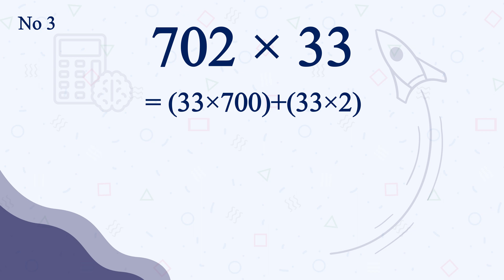33 times 700 plus 33 times 2. 7 times 33 is 231 and putting 66 after it will be the answer which is 23166. Super fast and easy, right?